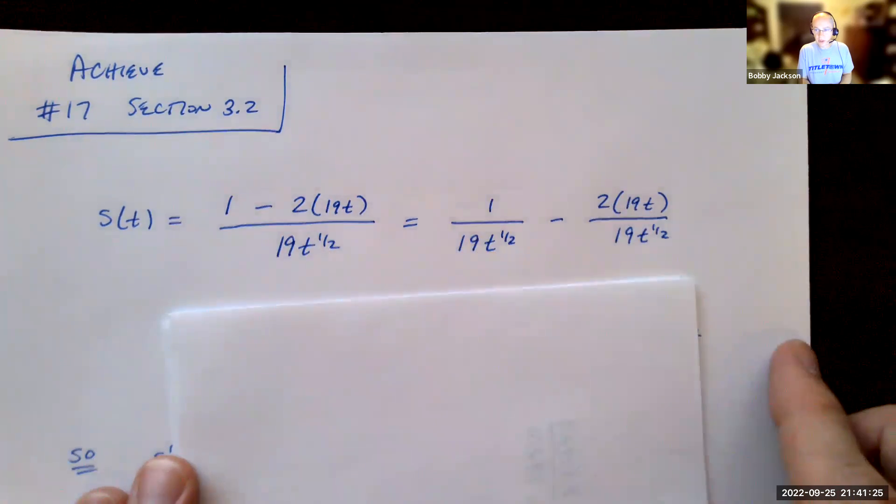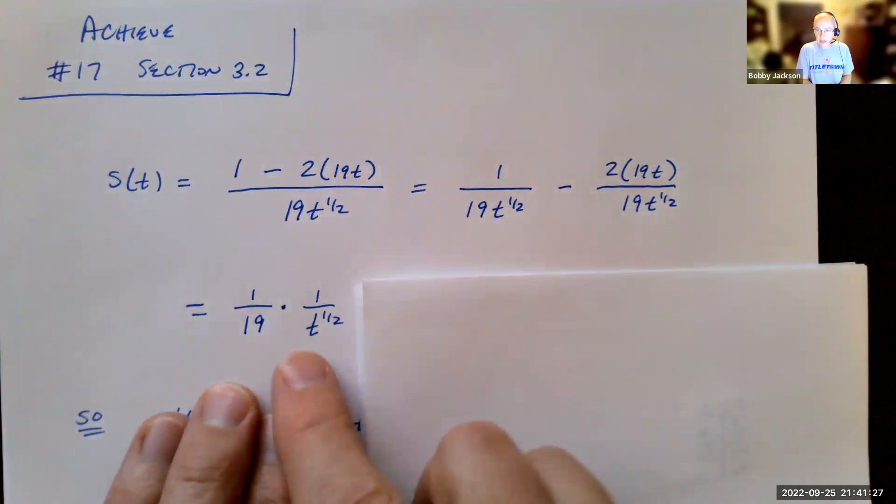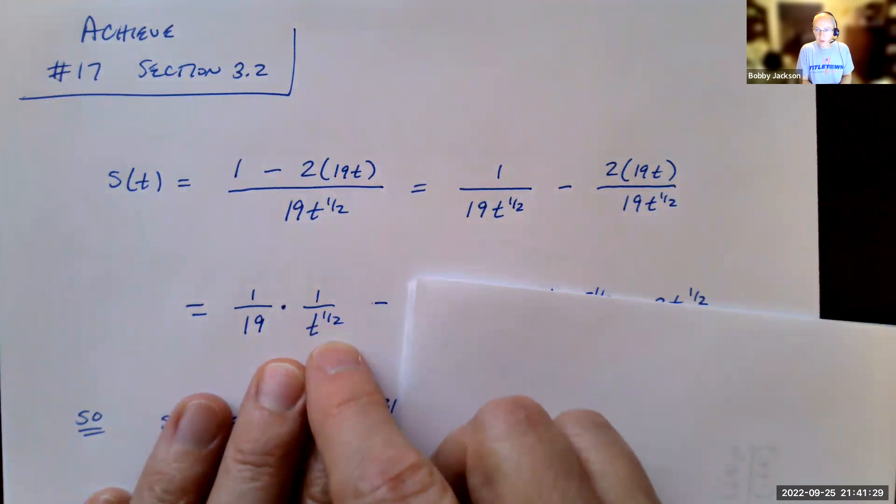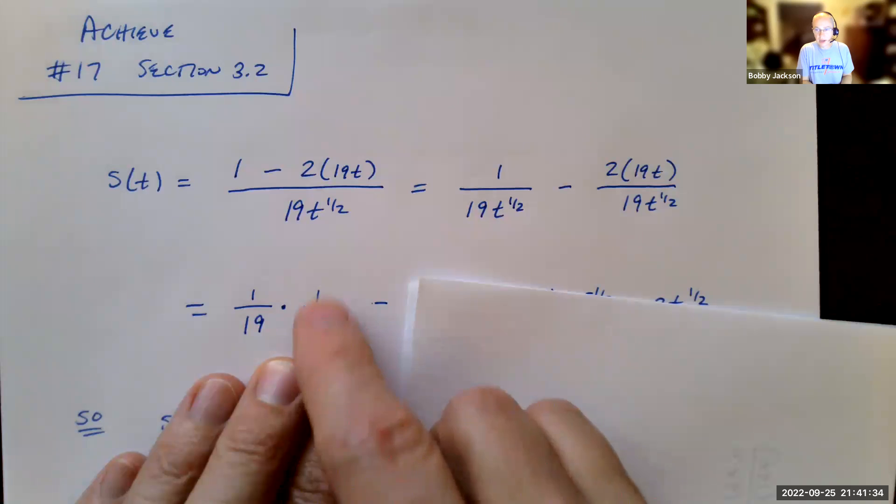This is just written then as 1/19th times 1 over t to the 1/2. And then this 1 over t to the 1/2, in order to differentiate this part, I need to rewrite that as t to the negative 1/2 power. So that's how I'm going to rewrite that.